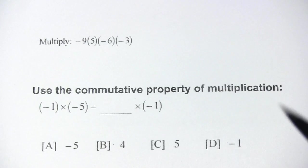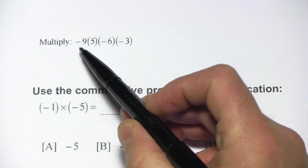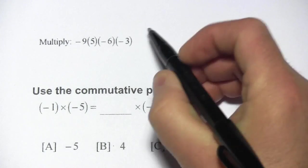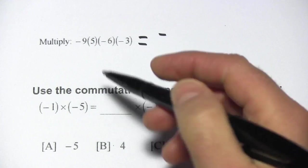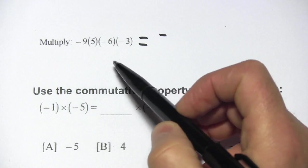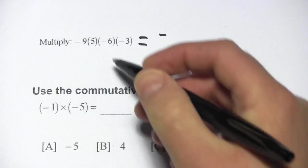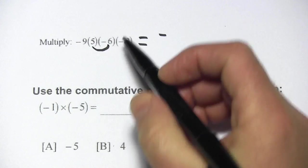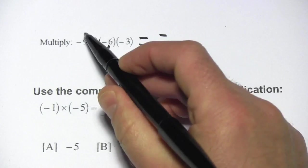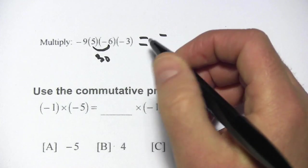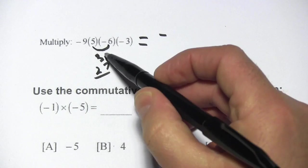Let's try another one. Let's count the negative signs first: one, two, three. That's an odd number again so this is also going to be negative. We've got nine and five and six and negative three. I'm going to group these in a way where it's easiest to multiply. Five times six is thirty, and nine times three is twenty-seven. So we have twenty-seven times thirty.